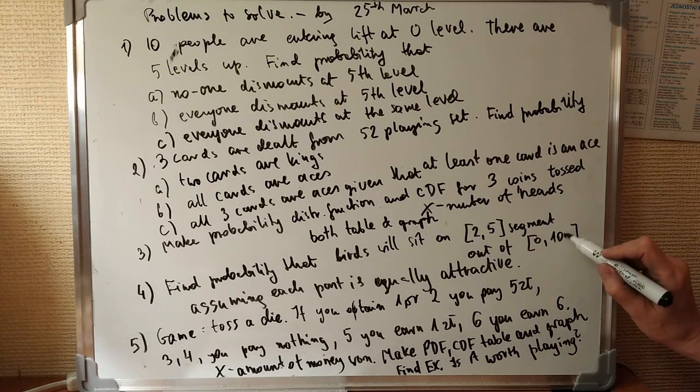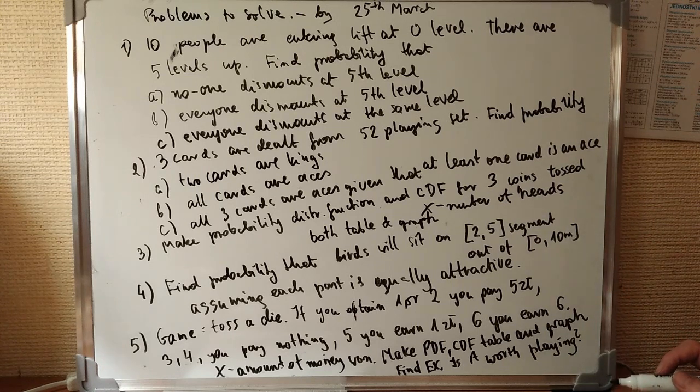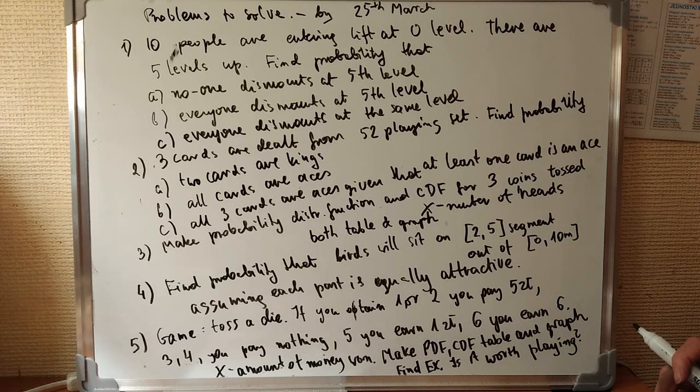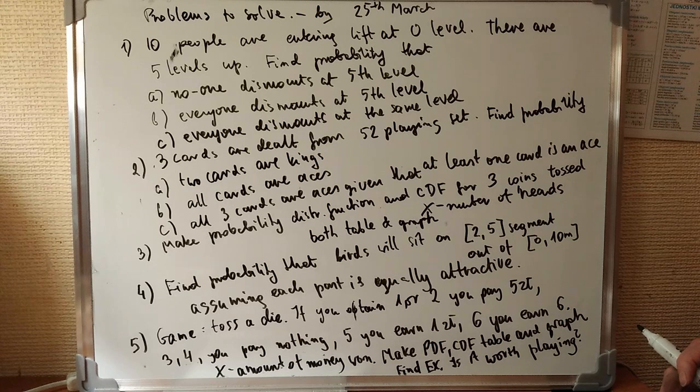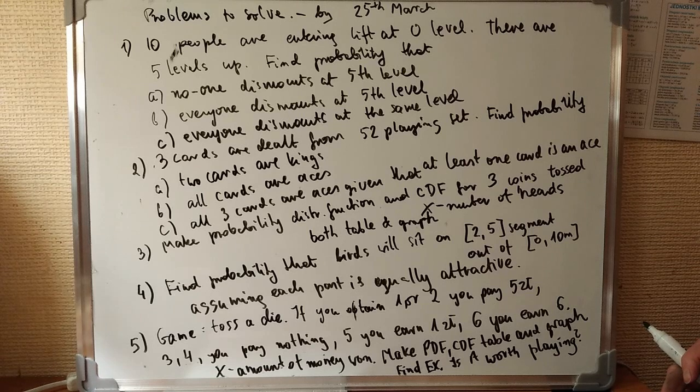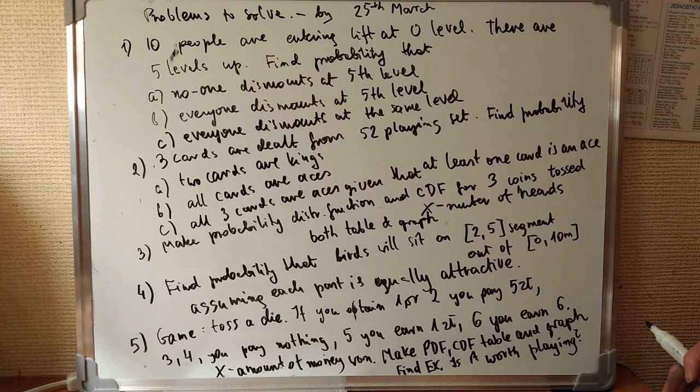So one, two, three, four, five, or six may occur. It's a fair die. If you obtain 1 or 2, you pay 5 zlotys. If you obtain 3 or 4, you pay nothing. If you obtain 5, you earn 1 zloty. If you obtain 6, you earn 6 zlotys.